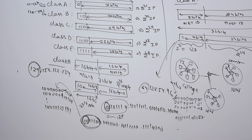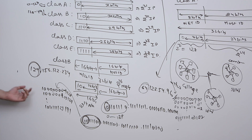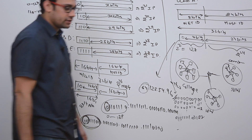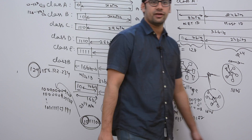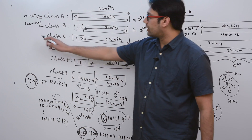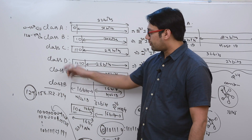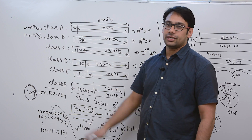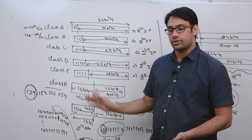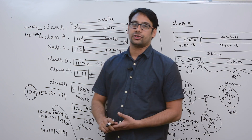In case of class C, we can find this kind of value, which we will be discussing in the next video. For now, just remember that if the first octet is between 128 to 191, it is a class B IP address.